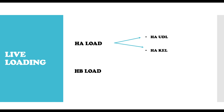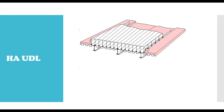Let's talk about HA UDL. It is essentially a uniformly distributed load that is applied across the deck of the bridge — but it is applied across the notional lane, not the whole width of the bridge. In my previous video I mentioned that one of the most important terminologies in bridge loading is notional lanes, because most of our loadings are applied across them. You can see in this example of a bridge deck that the UDL is applied across part of the bridge — this is a typical example of an HA UDL load.